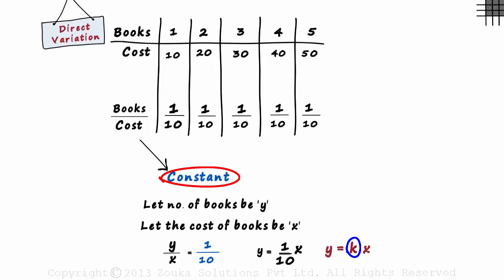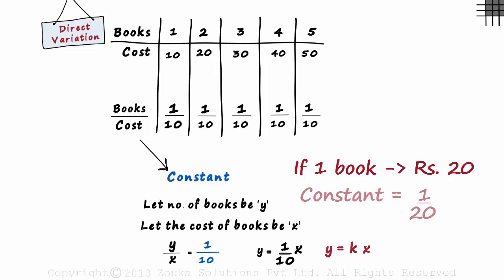Remember, this constant can have any numerical value. In this example, if one book would have cost 20 rupees, then the constant would have been 1 by 20.